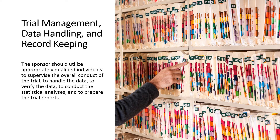The IDMC should have written operating procedures and maintain written records of all its meetings. If data are transformed during processing, it should always be possible to compare the original data and observations with the processed data. The sponsor should use an unambiguous subject identification code that allows identification of all the data reported for each subject.